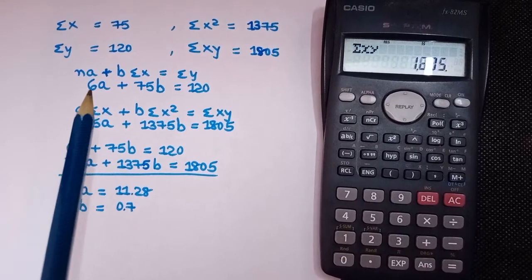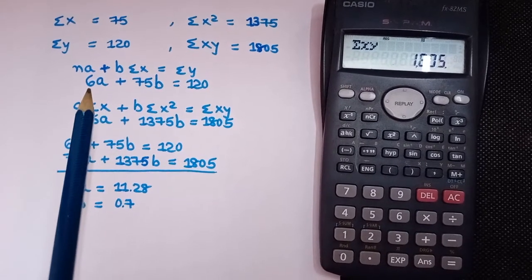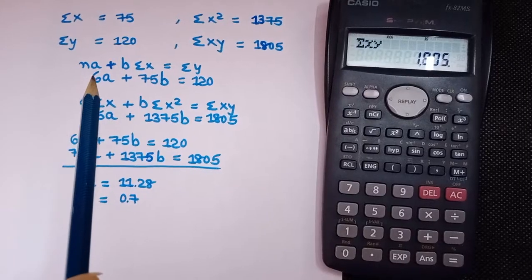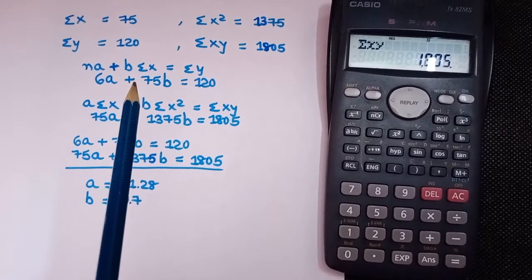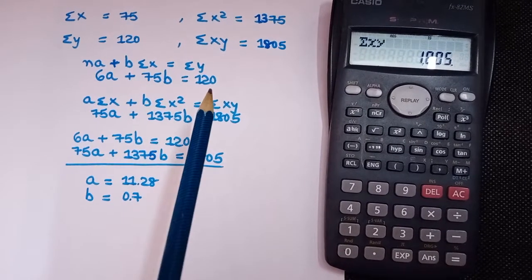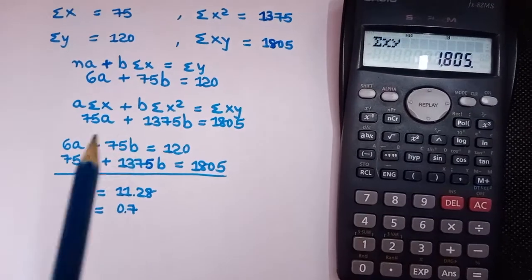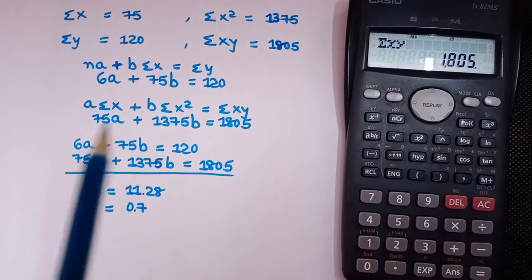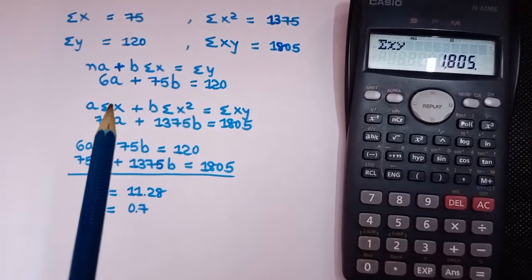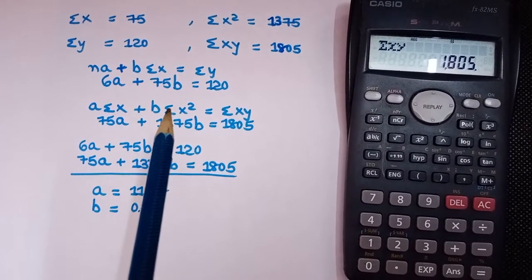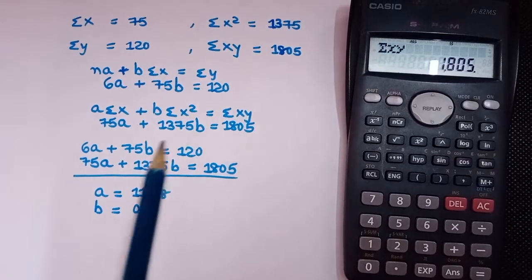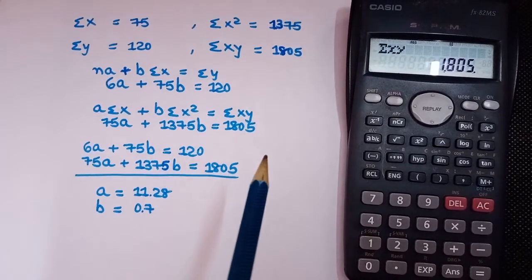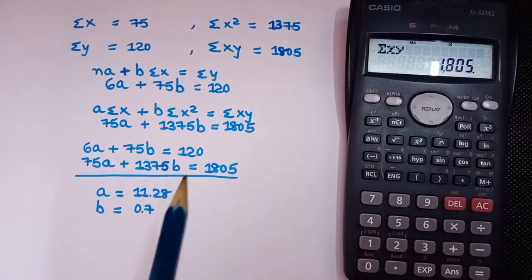We know that the normal equations for the straight line Y = A + BX are: NA + B·ΣX = ΣY, and A·ΣX + B·ΣX² = ΣXY. So the first equation is 6A + 75B = 120, and the second is 75A + 1375B = 1805.